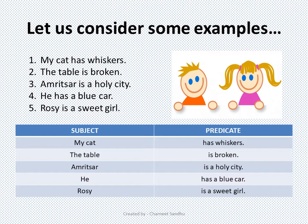Coming to the last example: 'Rosie is a sweet girl.' Here in this sentence, can you tell me what we are talking about? Yes — we are talking about Rosie. And what additional information are we getting about Rosie? That she is a sweet girl. So 'is a sweet girl' will be our predicate.